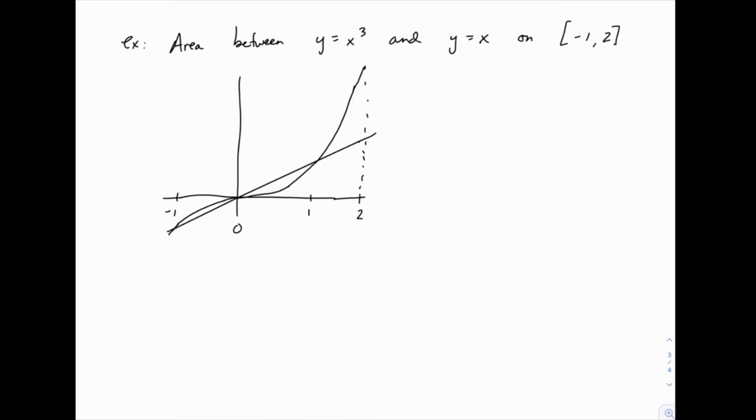It should be clear to you that there are three segments to this area: one enclosed between negative 1 and 0, another between 0 and 1, and another between 1 and 2.